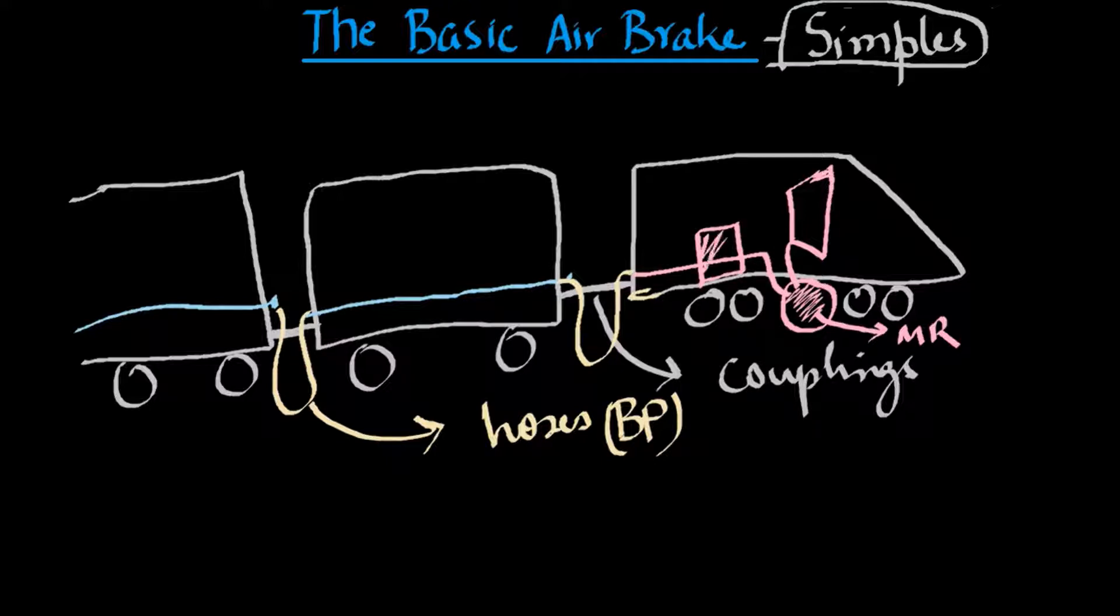However, this is done through brake valves and one of these brake valves is the A9 brake valve. This is also known as the automatic brake valve. When the driver wants to operate the brakes of the train, which means when the driver wants to apply or release the brakes, he controls the A9.